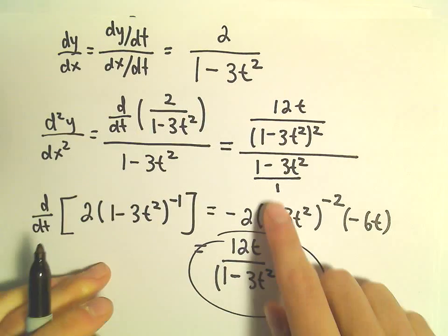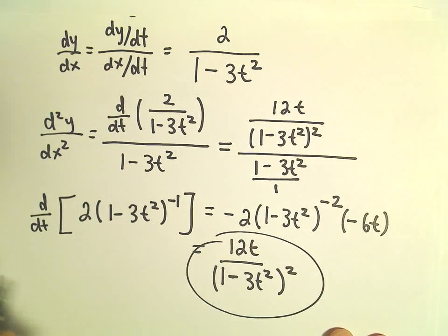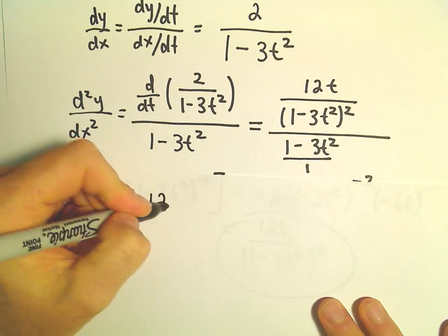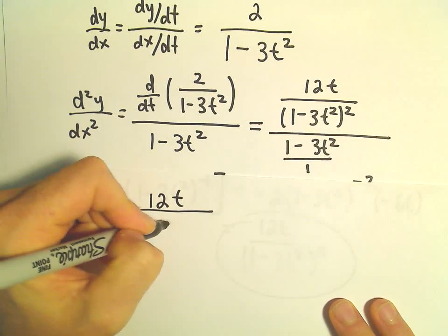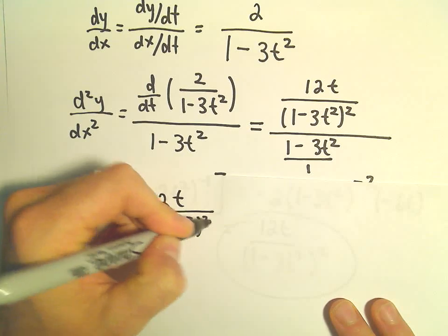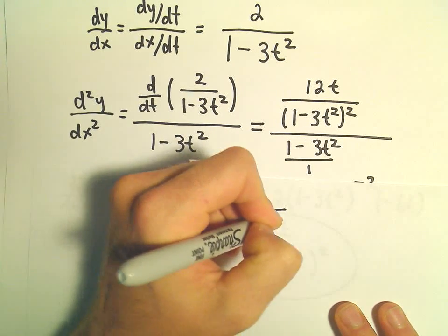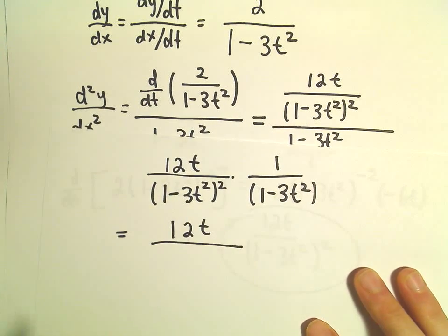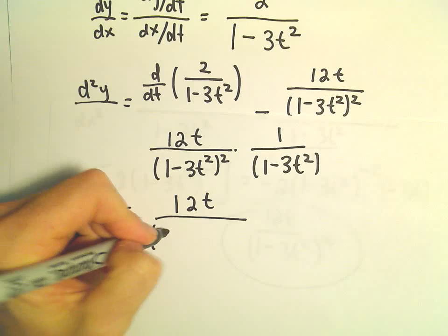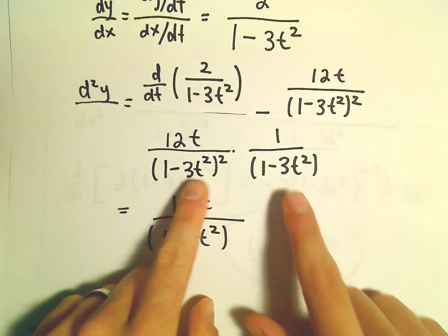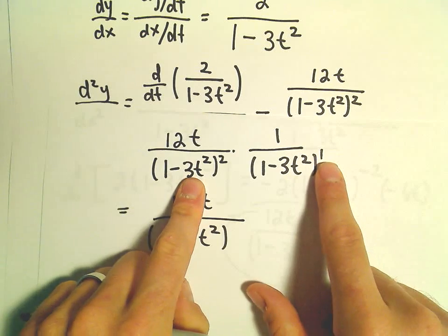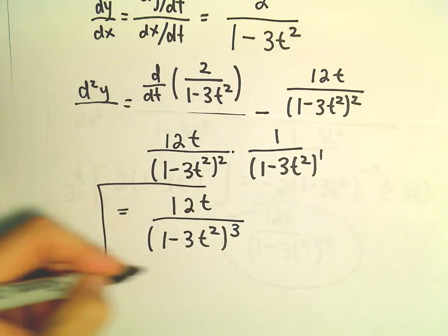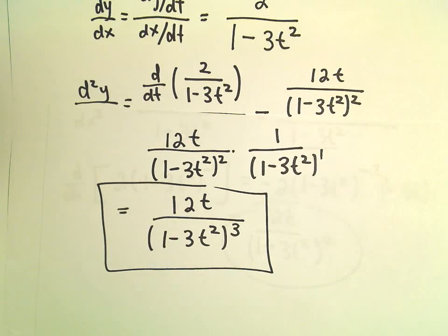So if you think about the denominators being over 1, if you flip and multiply, when we flip and multiply, we'll just be left with 12t over 1 minus 3t squared squared times 1 over 1 minus 3t squared. So I would probably write the final answer here as 12t over 1 minus 3t squared. So we've got a squared one and a 1 to the first power. So we can write all of that to the third power. And now we have our second derivative. So we'll see you next time.